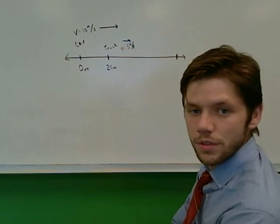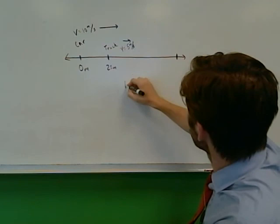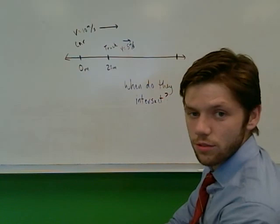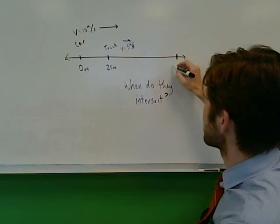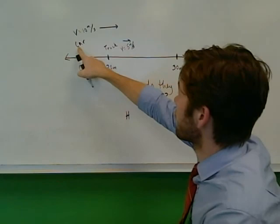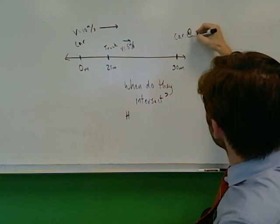At the same time, 20 meters down the road, a truck with a speed of v equals 5 meters per second is also traveling this way. The question is twofold.